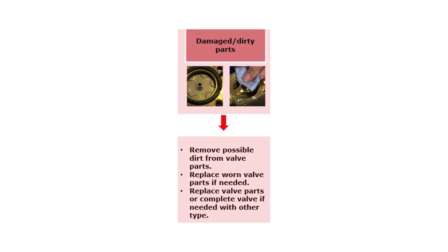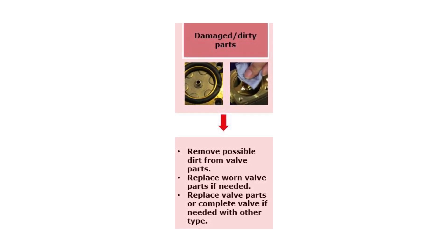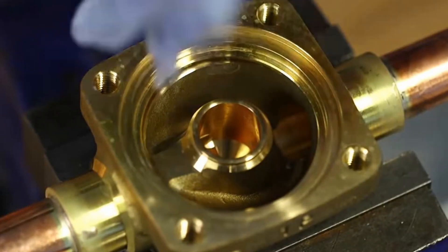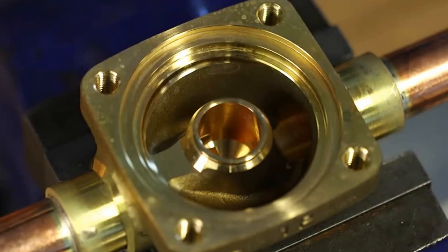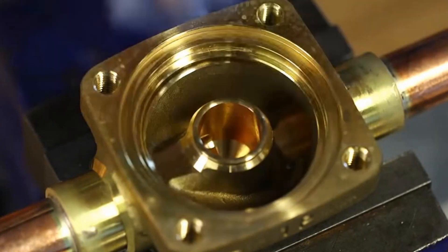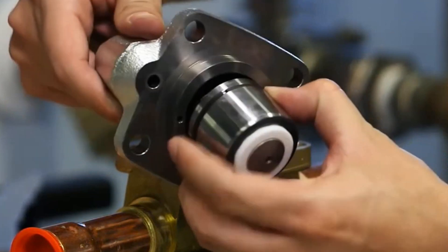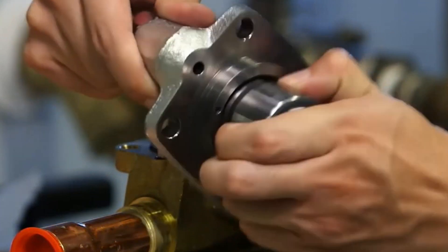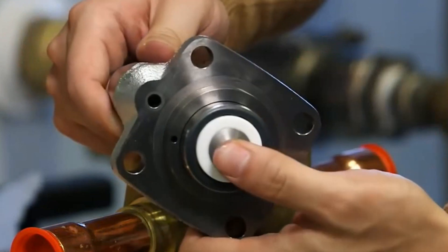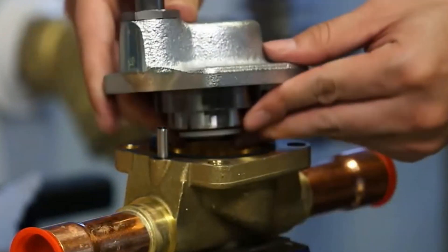Now if there seems to be damaged or dirty parts causing valve external leakage, then as a first step, take the valve apart, if it is serviceable, and clean the internal valve area and parts, as seen shortly here. If needed, replace worn parts using suitable service kits, and check out other Danfoss online videos about solenoid valve service.